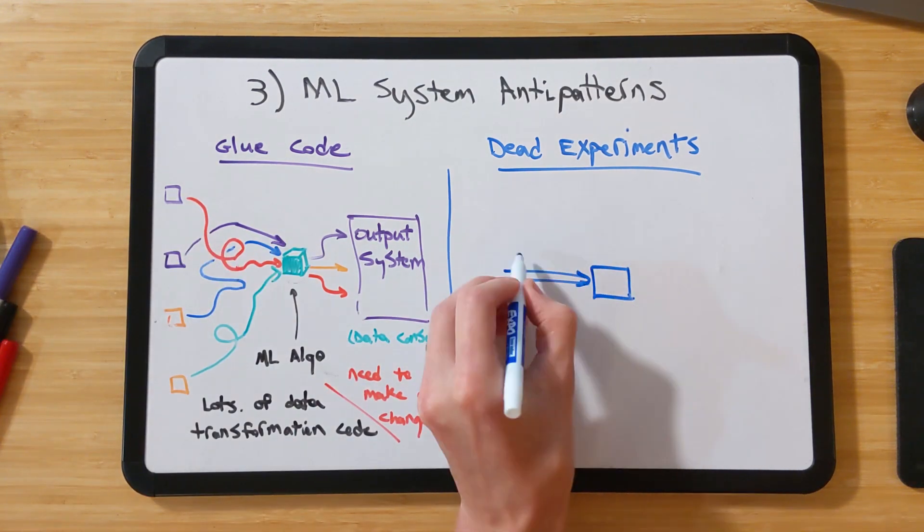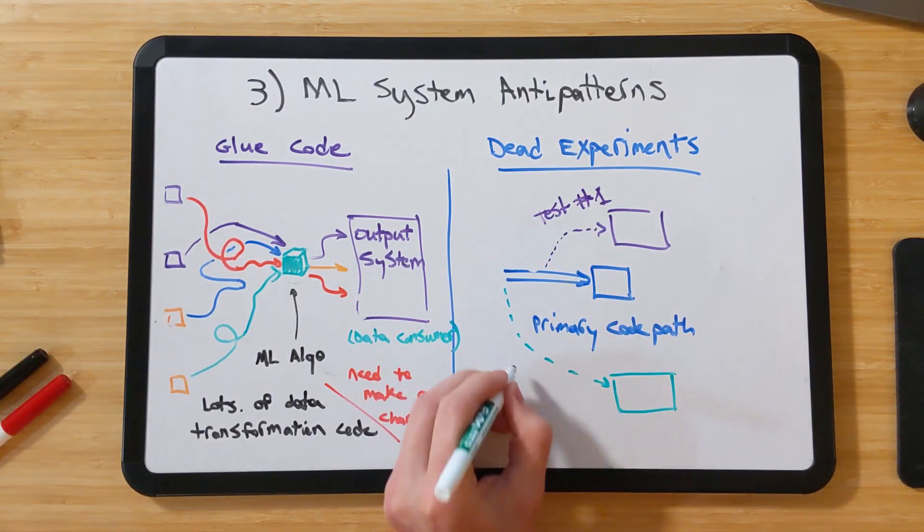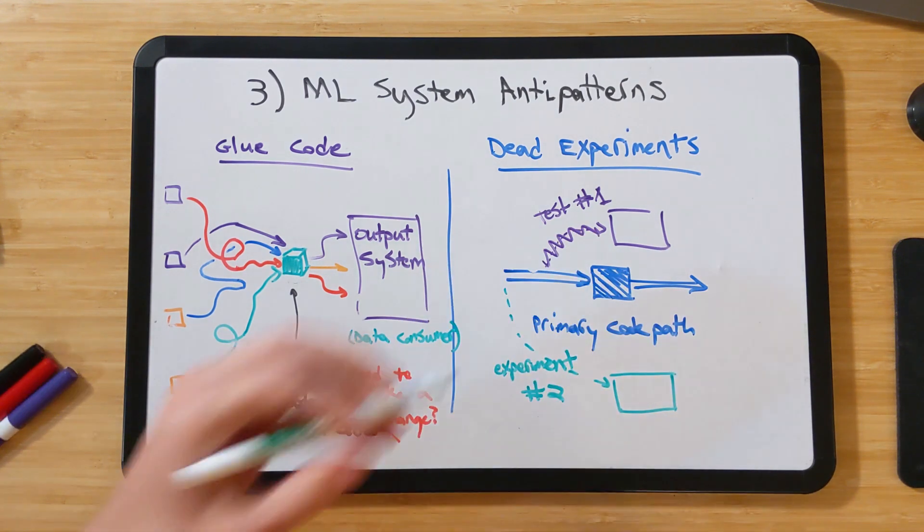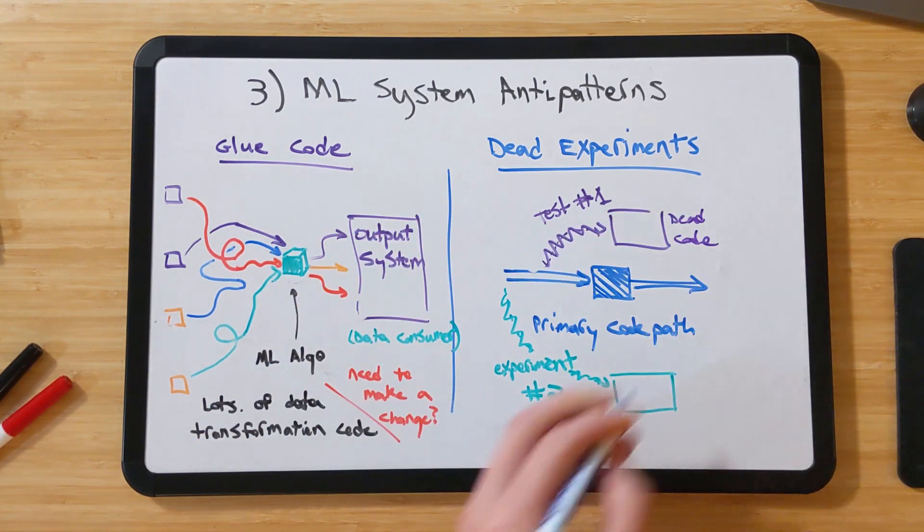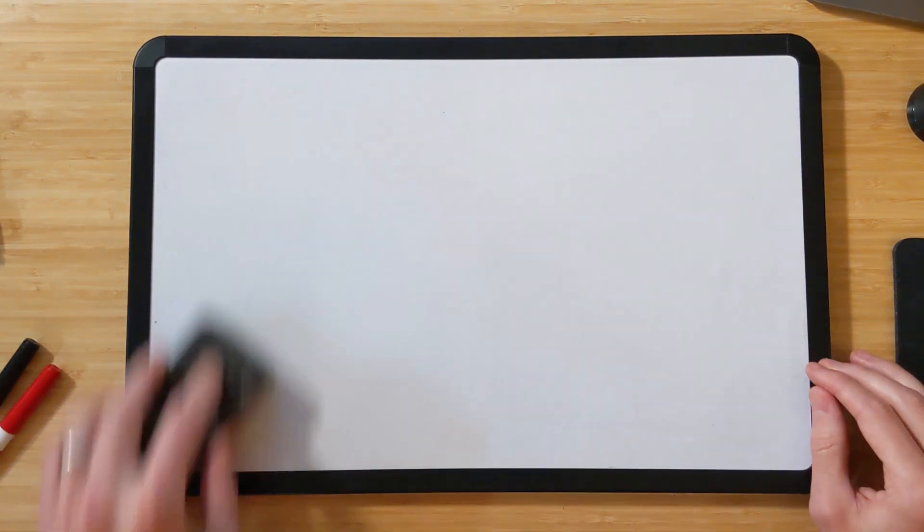Also, because of the experimental nature of machine learning system development, it can be tempting to perform experiments using branching or conditional code paths. The cost of each of these individual experiments is low, but over time, if they accumulate, they can become a nightmare to maintain and slow the pace of progress of the entire system.